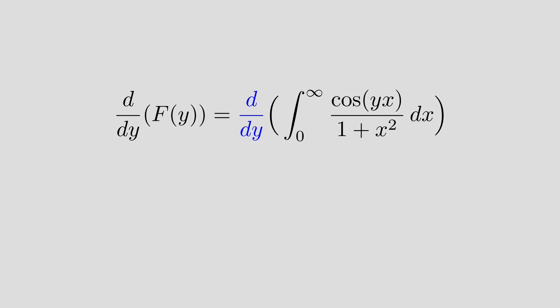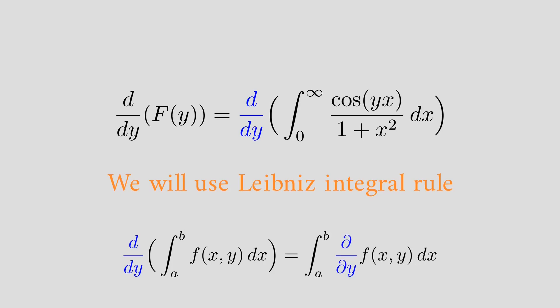The Leibniz integral rule says that the derivative of the integral is the integral of the derivative under some conditions. Of course, this theorem is the essence of Feynman's trick.